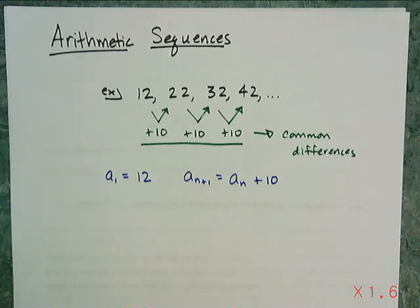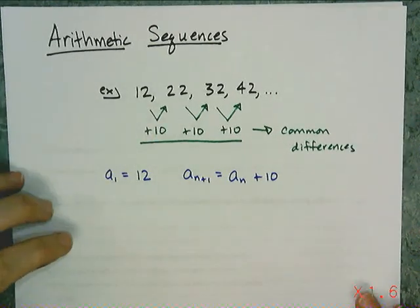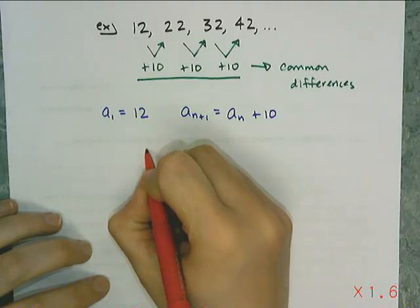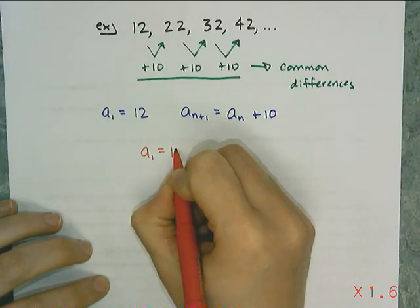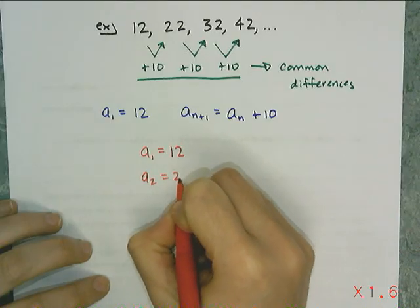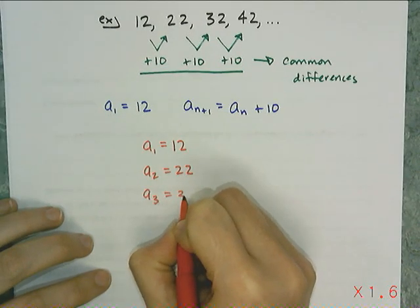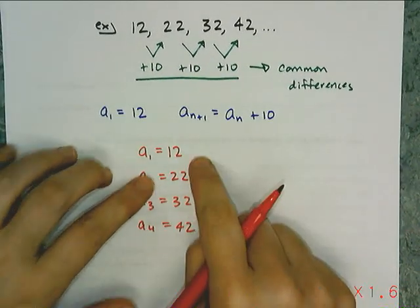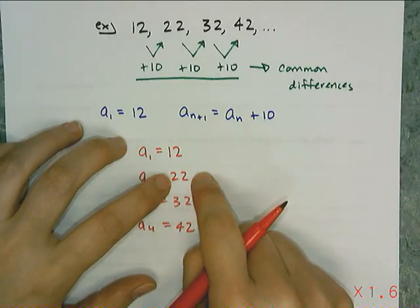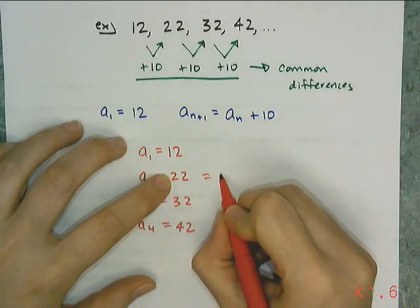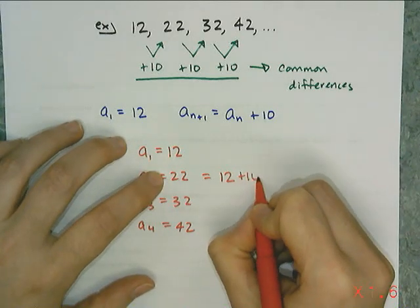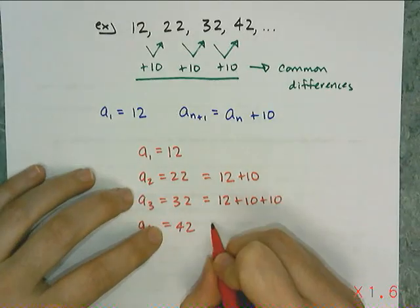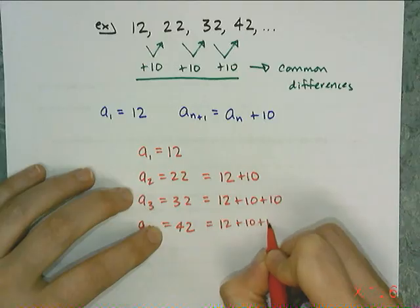Now what's interesting about arithmetic sequences is writing the explicit formula for them. I'm going to show you a different way of thinking of this sequence. We're going to rewrite each term: a sub 1 is 12, a sub 2 is 22, a sub 3 is 32, a sub 4 is 42. I want to think about where 22 comes from — it comes from taking the previous term 12 and adding 10 to it. Then 32 comes from 12 plus 10 twice, and 42 is 12 plus 10 plus 10 plus 10.